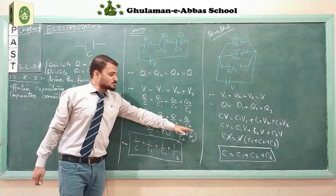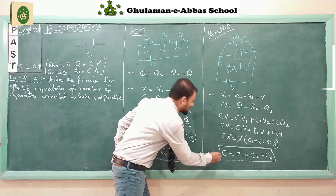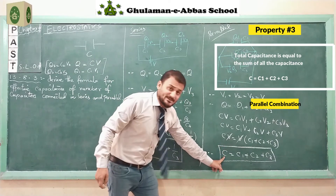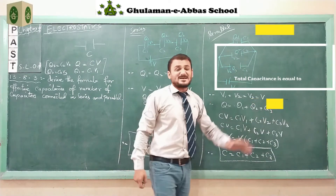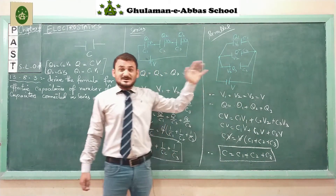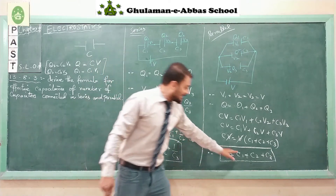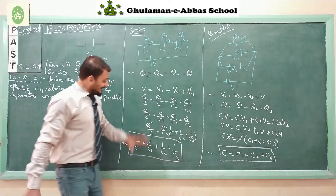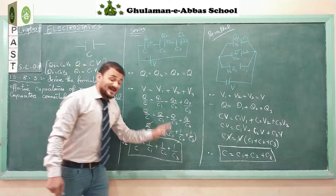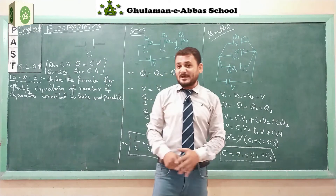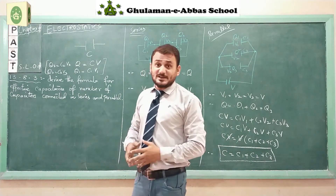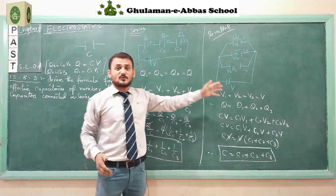This formula is the third characteristic of parallel combination: the total capacitance is equal to the sum of the capacitance of each capacitor. When we know the values of all three capacitors, we directly add them to get the total capacitance — unlike series combination where we take reciprocals and then sum them. So this was our lecture in which we derived formulas for series and parallel combinations.